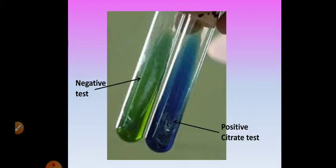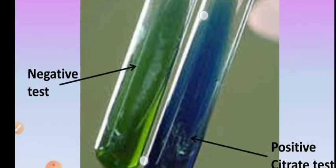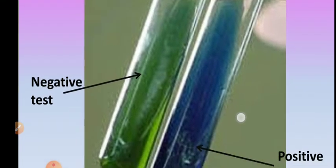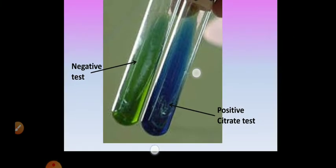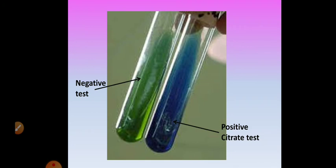In summary, for IMVIC classification of fecal and non-fecal coliforms: fecal coliforms are indole positive, methyl red positive, VP negative, and citrate negative. Non-fecal coliforms are indole negative, MR negative, VP positive, and citrate positive. Two tubes showing Simmons citrate agar are shown — the first is a green slant indicating citrate utilization test negative, and the second is intense blue indicating positive citrate utilization test. That is all about IMVIC classification.